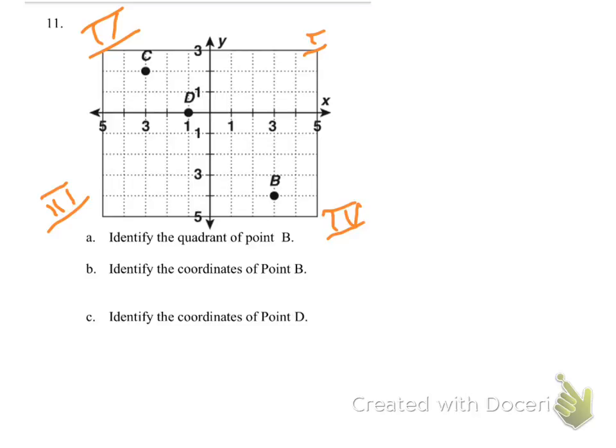Quadrant 4. Okay, so that's all you have to write down for that. Quadrant 4. And that's it for part A.